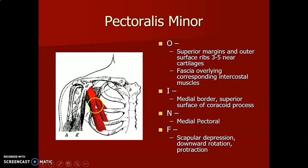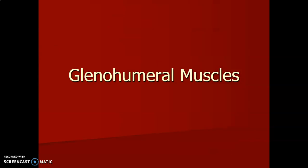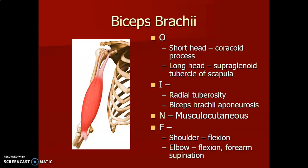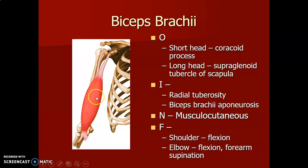Moving to the glenohumeral muscles. Biceps brachii has a short head from the coracoid process and a long head from the supraglenoid tubercle. They insert on the radial tuberosity and bicipital aponeurosis, innervated by the musculocutaneous nerve. They cause shoulder flexion, elbow flexion, and supination of the forearm when the elbow is flexed.